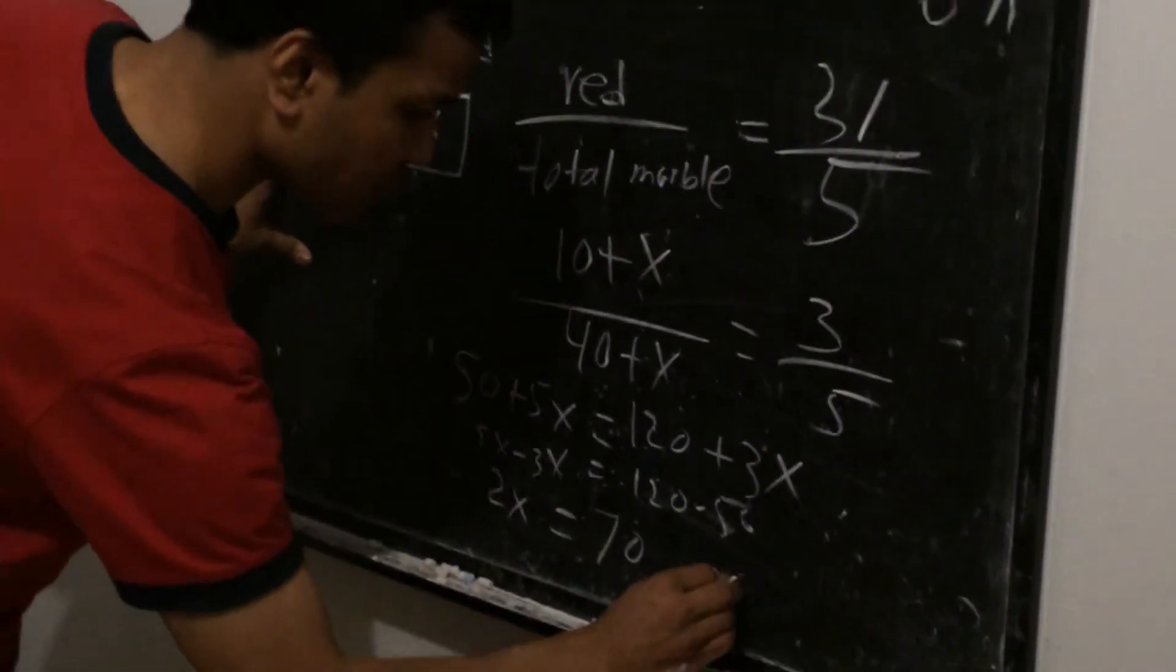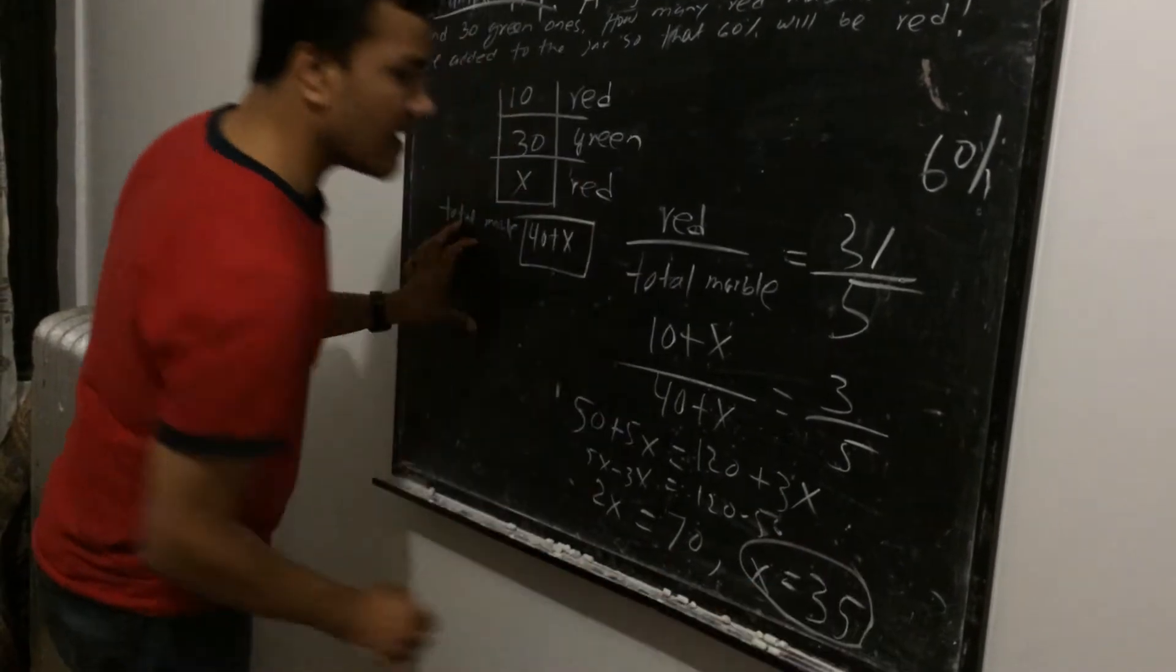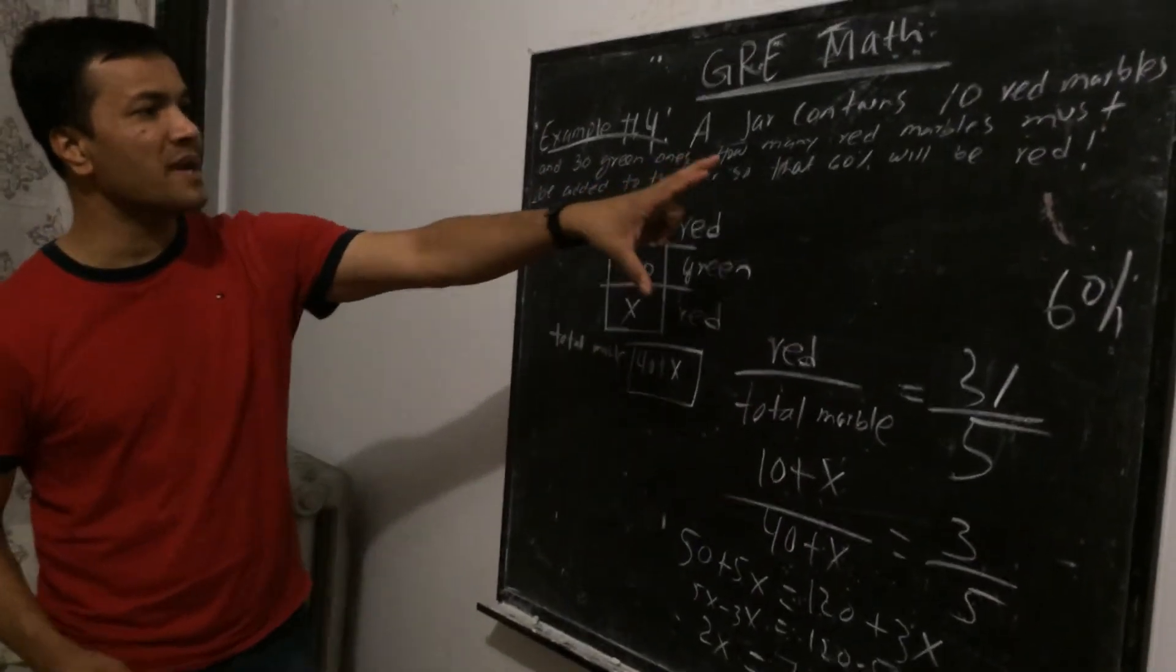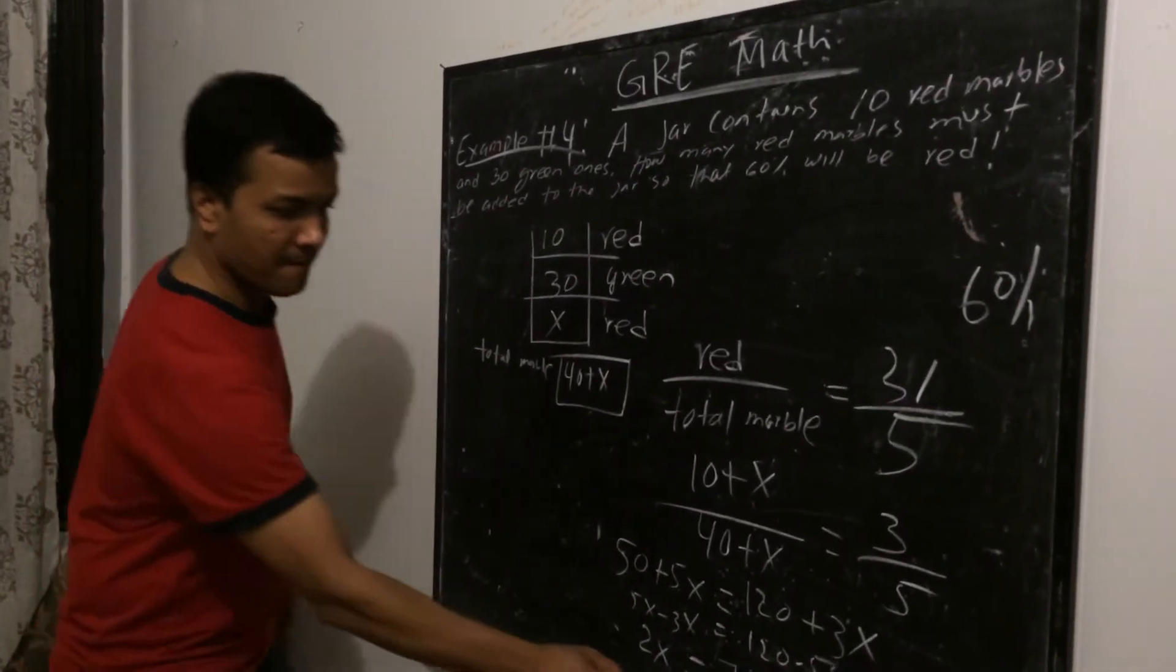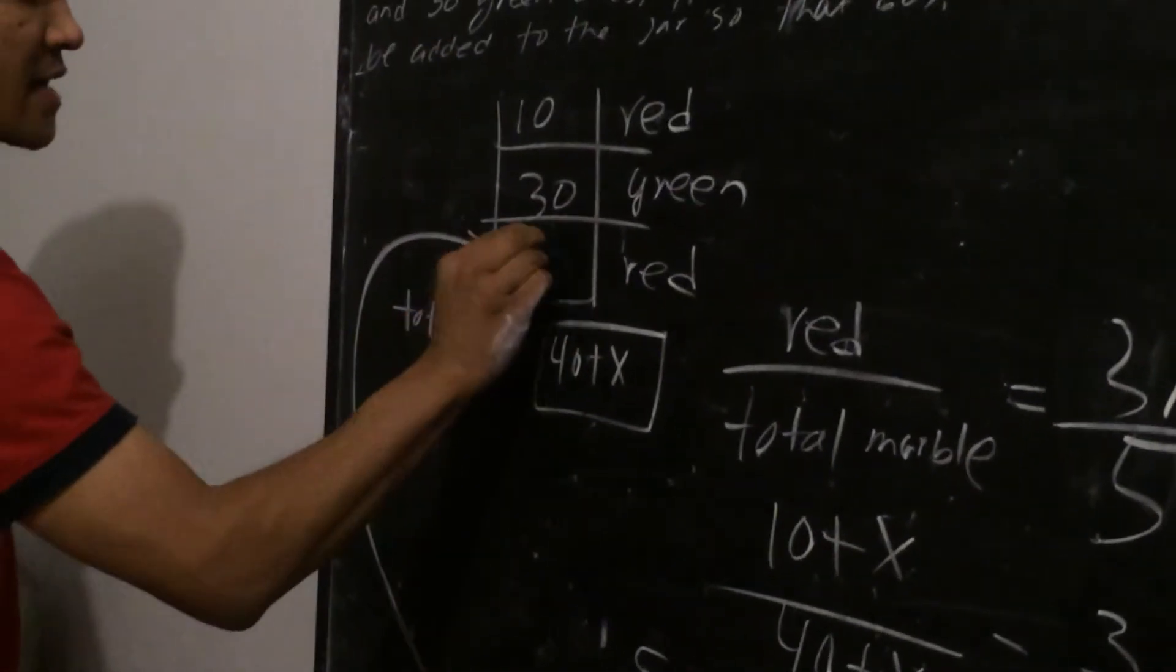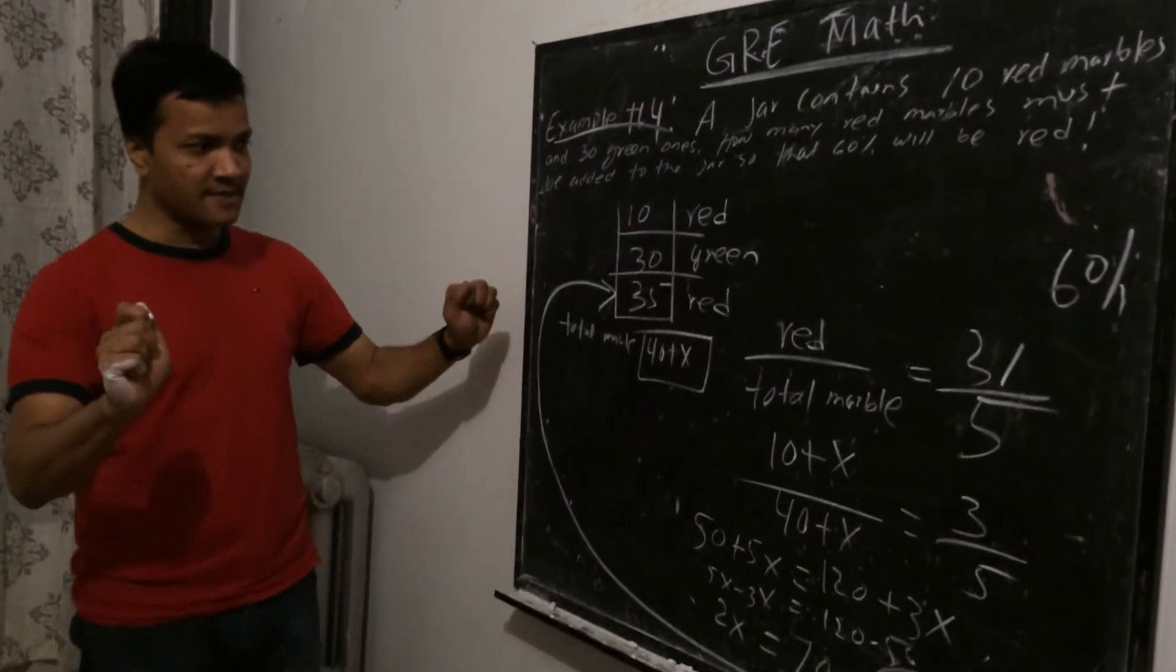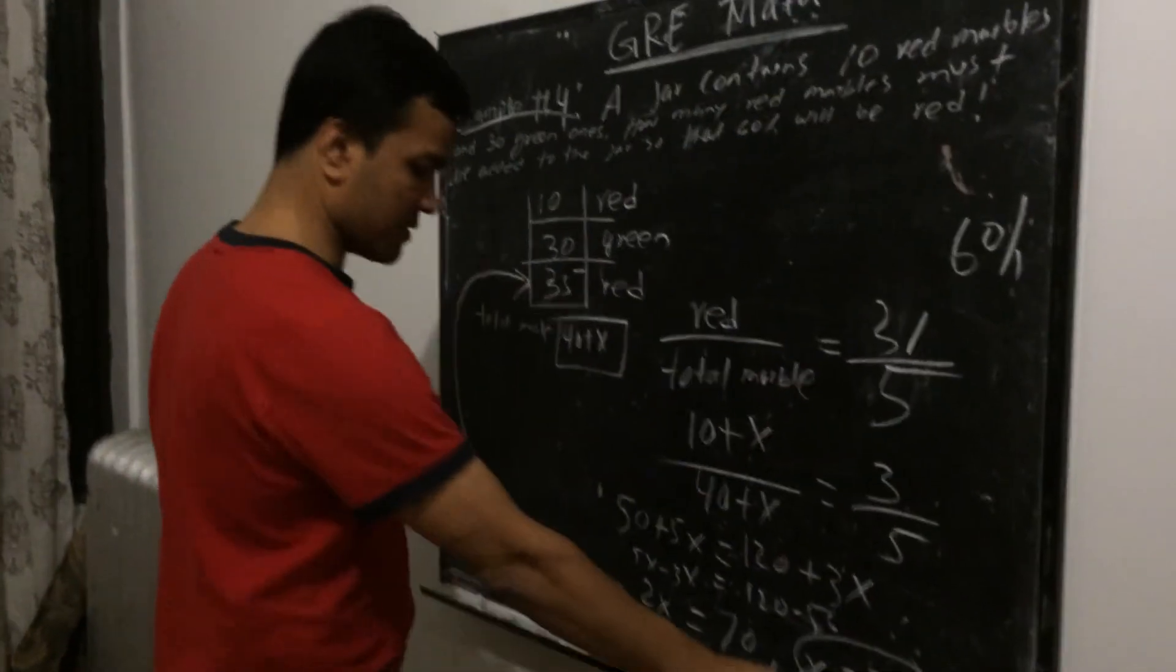So x is equal to 35, alright. That means, how many marbles? So it says how many red marbles must be added. So 35 red marbles must be added so that 60% of total marbles is red. So now, next time we're going to do more on this.